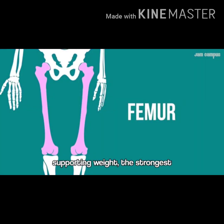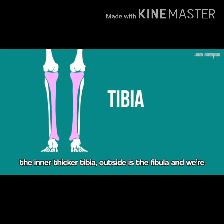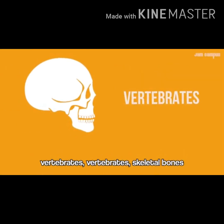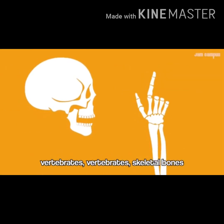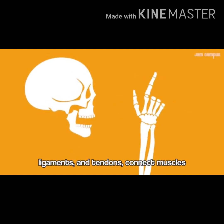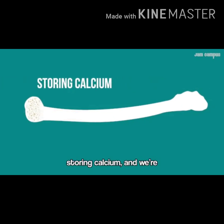The femur is your upper leg bone — the strongest, longest, and heaviest bone of all. To protect your knees, there is the small patella bone. The inner lower leg bone is the tibia; the outside is the fibula. The skeletal system's functions include: ligaments and tendons connecting muscles, blood cell production, and storing calcium.